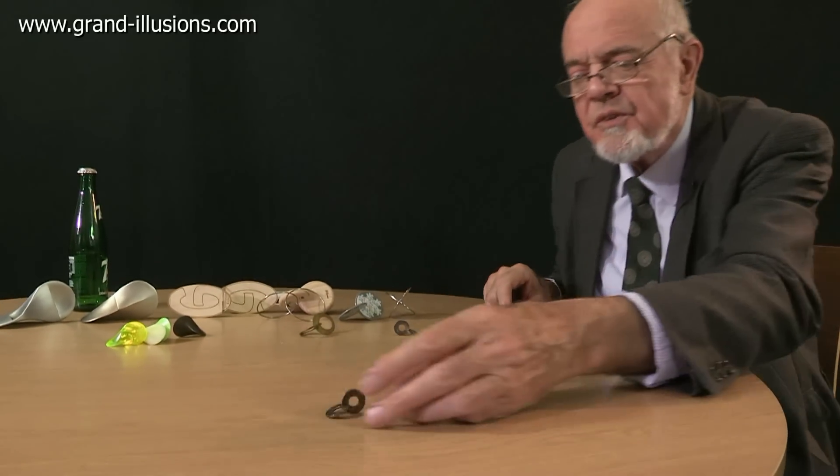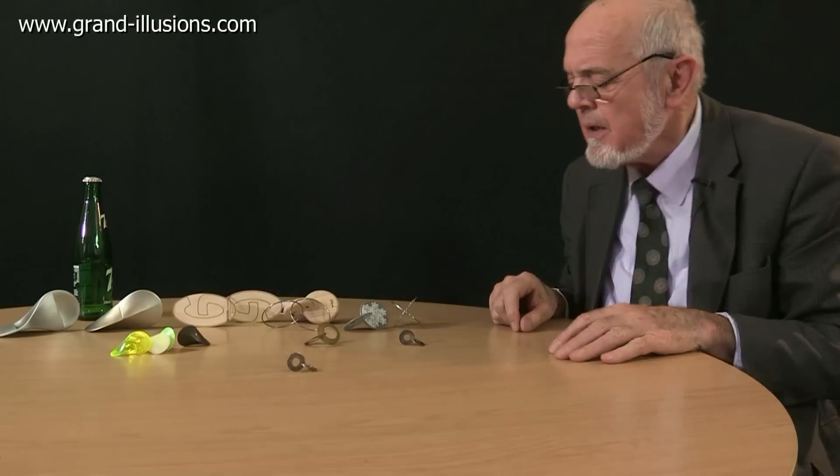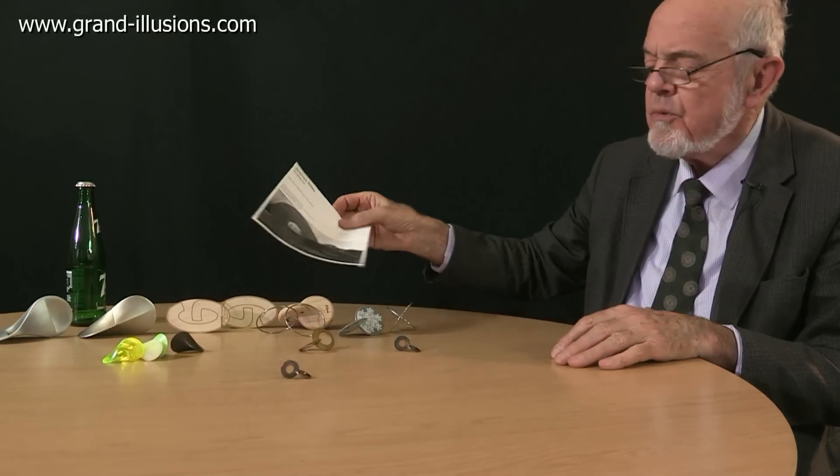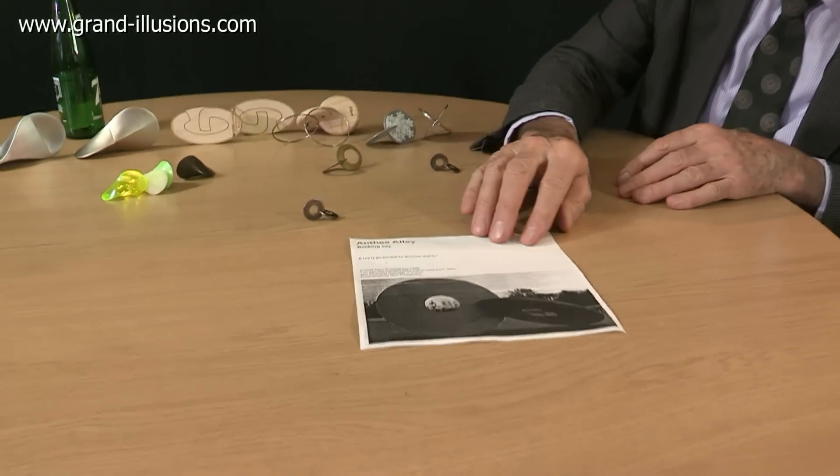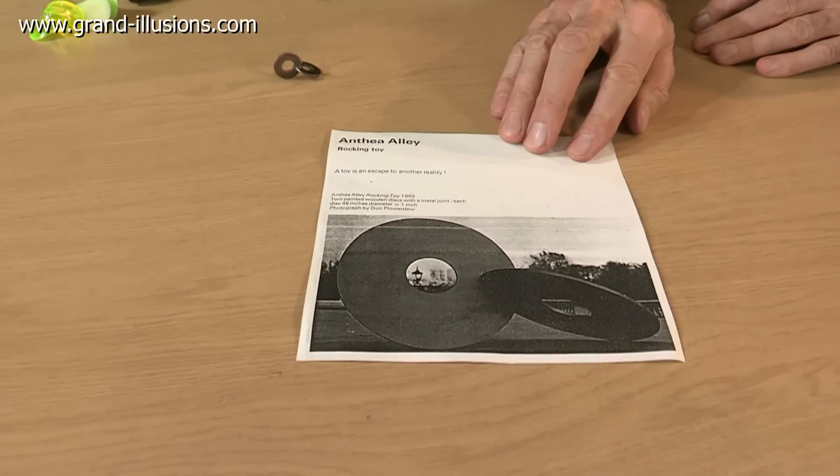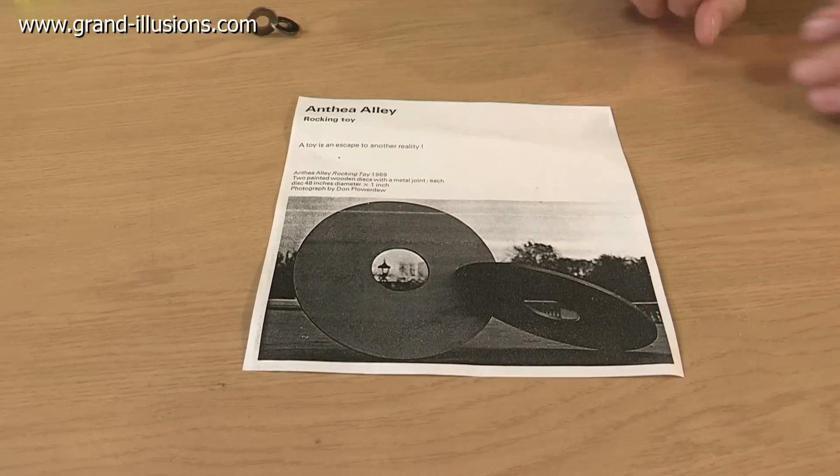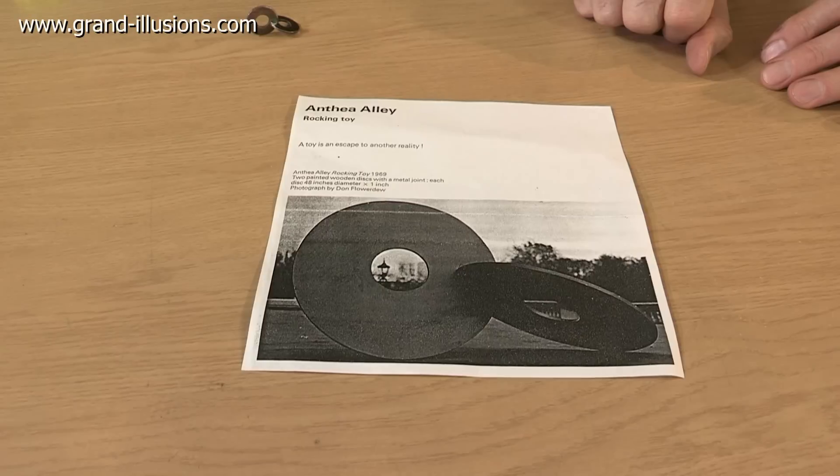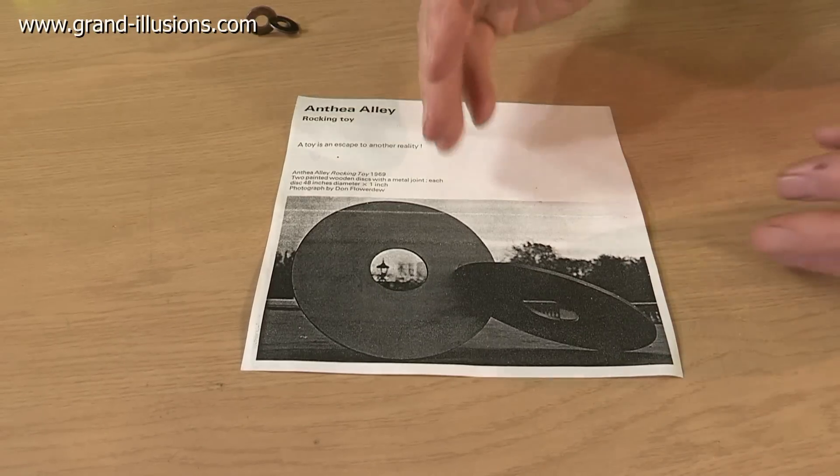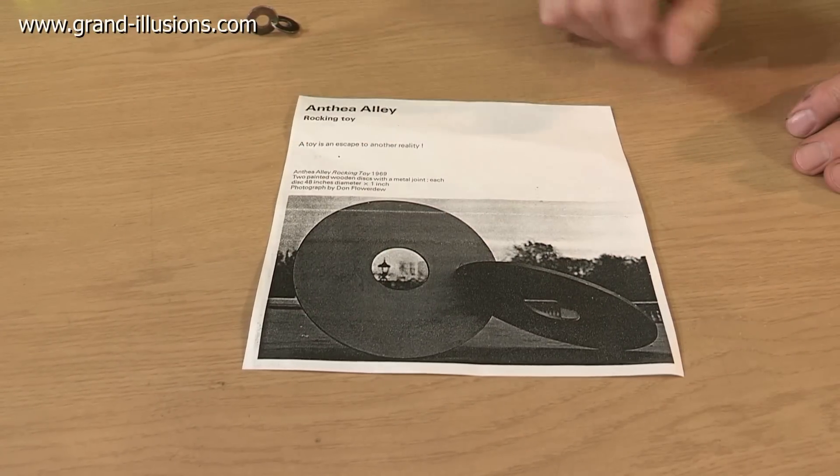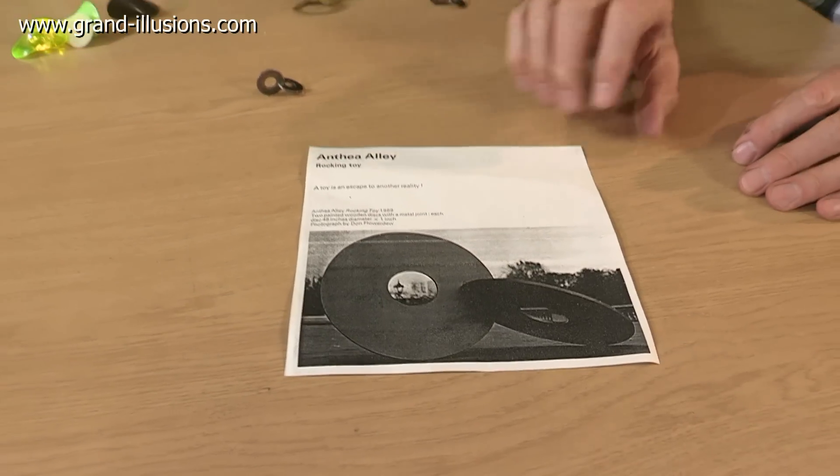When it comes to large wobblers, I did discover when I was studying these at that time, there was an artist who made one way back in the 80s, which was four-foot diameter pieces of wood. They called it a rocking toy. I don't think it actually wobbled, it just stayed on the plinth and wobbled back and forward. But four-foot diameter, that's a seriously large wobbler.